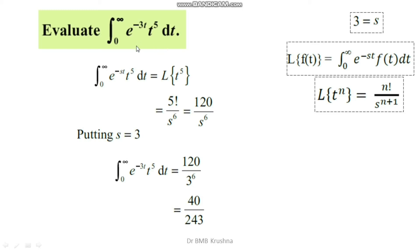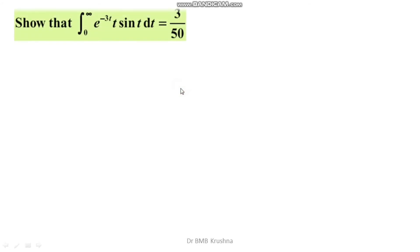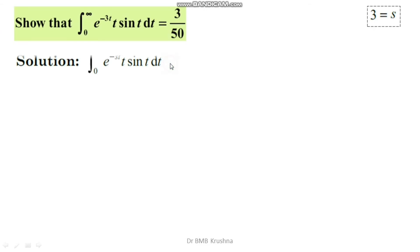That is the beauty of the Laplace transform technique in the evaluation of improper integrals. Now, show that the integral from 0 to infinity of e^(−3t) · t · sin(t) dt equals 3/50, using the Laplace transform technique. Assume 3 is equal to s, so the integral becomes the integral from 0 to infinity of e^(−st) · t · sin(t) dt.